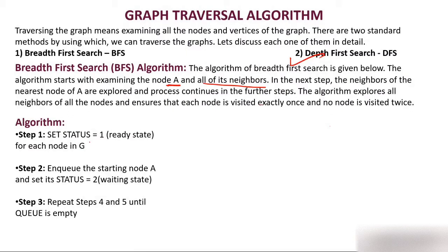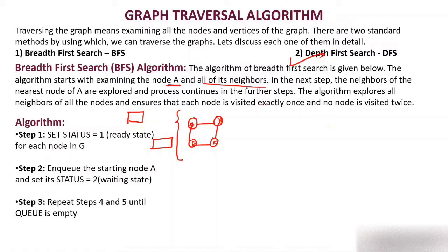The first step of the algorithm sets status equal to 1 (ready state) for each node in graph G. Suppose you have a graph with four nodes A, B, C, and D. The first part is to set the status of all nodes as ready state. Using an interview room analogy: all nodes are ready to enter. Then we queue the starting node — say A — and set its status to 2 (waiting state).